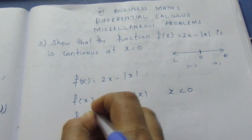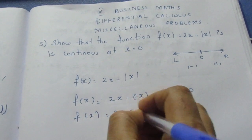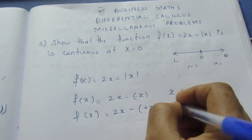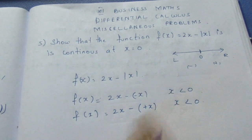That is f(x), if you have 2x minus plus x when x is greater than 0. If x is greater than 0...